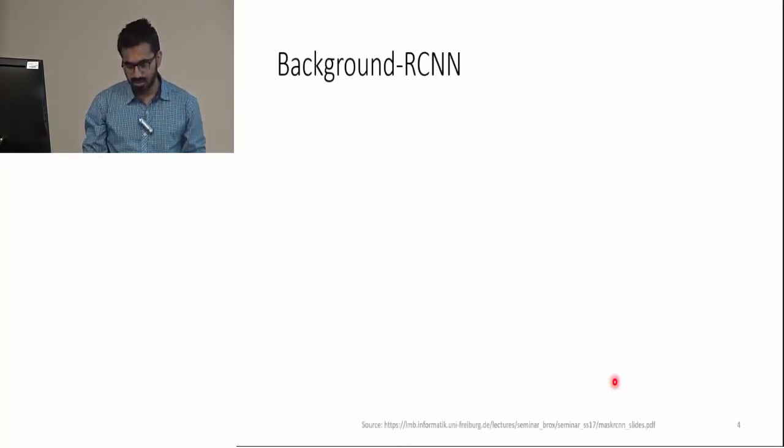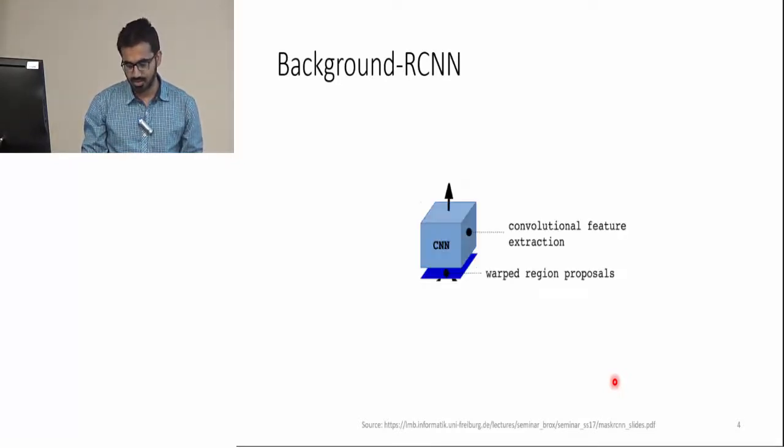Now some background. This line of work started with R-CNN, the first paper which attempts to do object detection using deep learning. Like most early applications of deep learning in computer vision, this paper used convolutional neural networks as a feature extractor.